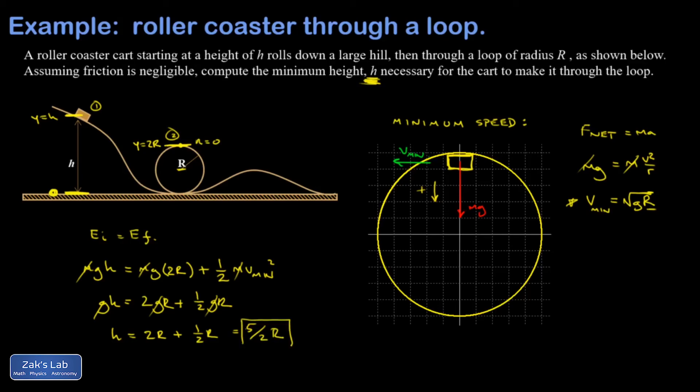So if you want to barely make it through a loop, you have to go to 2 and 1 half times the radius of the loop, and you'll just barely get through. Of course, with any real system, there would be some friction, so you'd probably want to start a little bit higher before you did your first test.